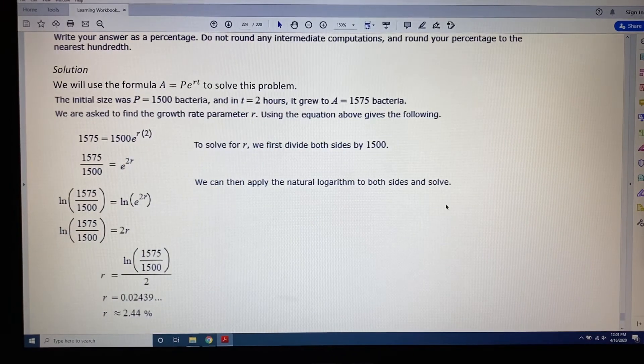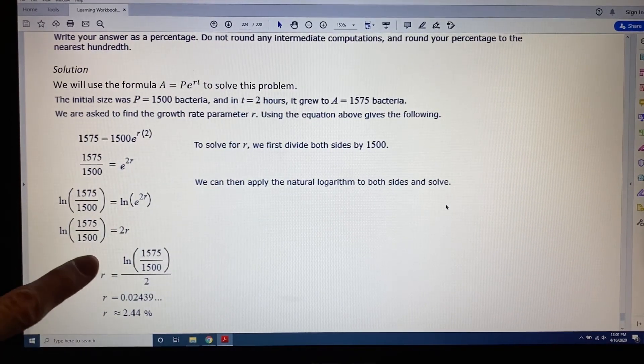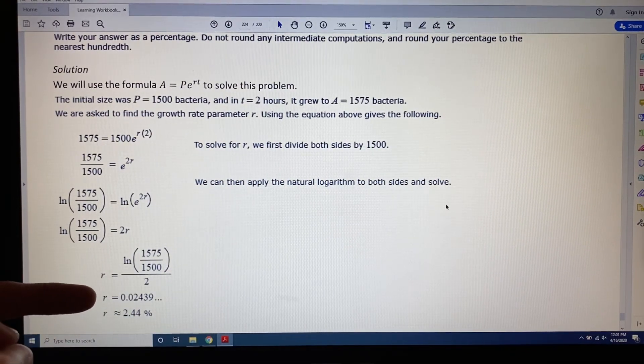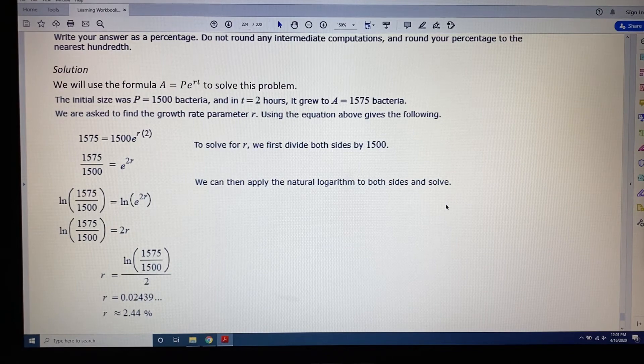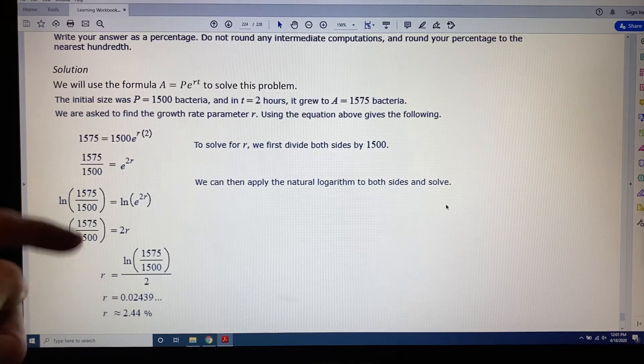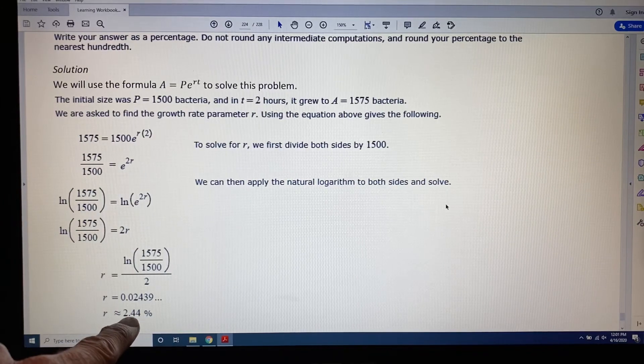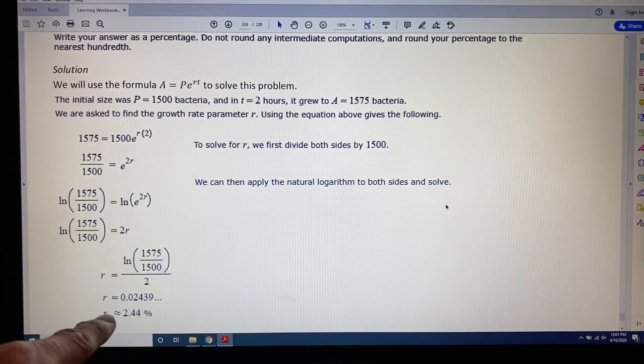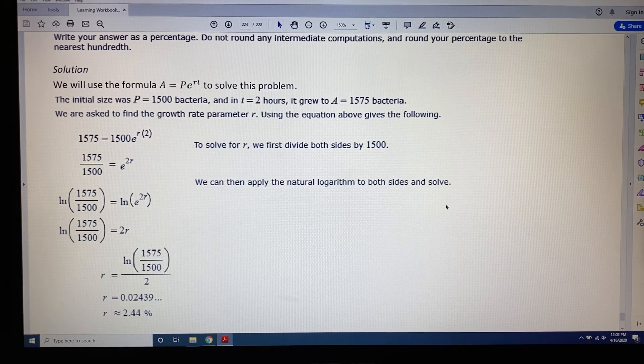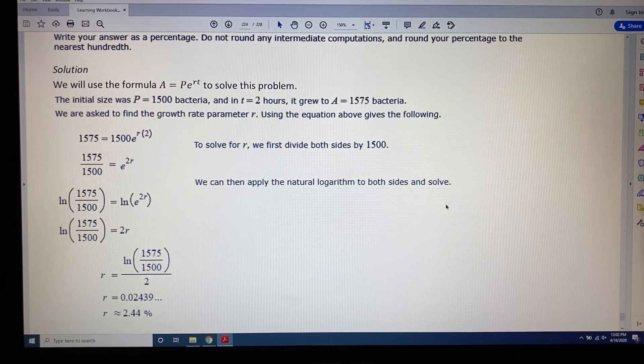Alright, so now we know what 2R equals. But what we want to know is what R equals. So divide both sides by 2. So we have the natural log of our fraction divided by 2. This gives us the exact answer 0.02439, etc. But remember, we need a percentage as our answer. So we multiply by 100 and round to the nearest hundredth and we get R is approximately 2.44% growth. R is positive, that makes this growth.